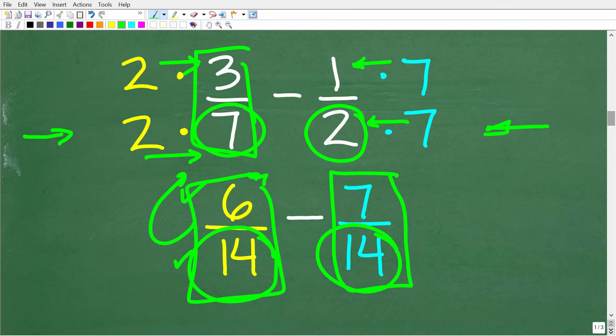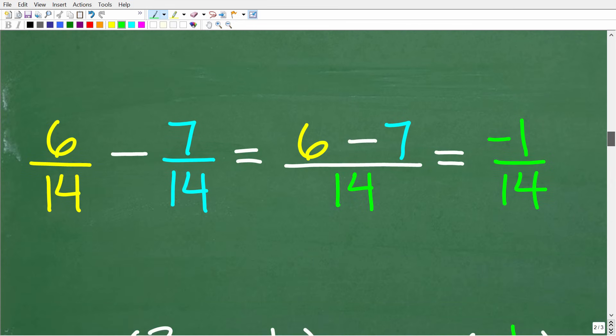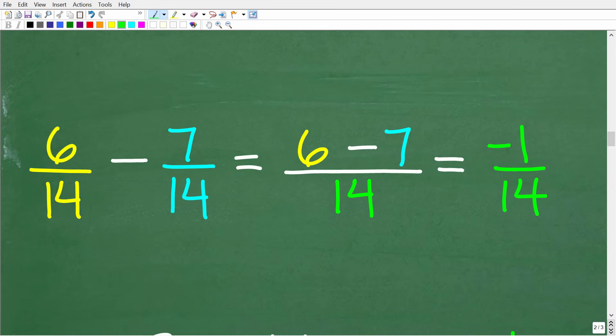So we end up with 6 over 14. 2 times 3 is 6. And 2 times 7 is 14. So this fraction here is equivalent to the fraction 3 sevenths. But it has our lowest common denominator, 14. Okay,